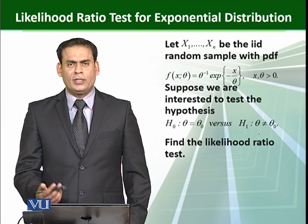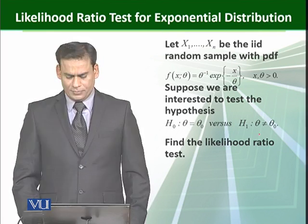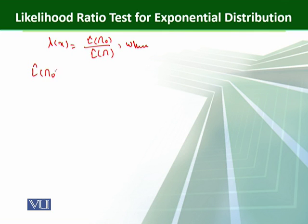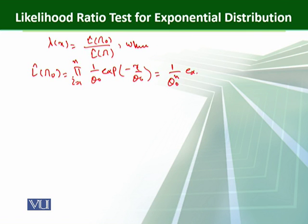Find the likelihood ratio test for this type of distribution. The likelihood ratio test lambda(x) is the ratio of the maximization based on the null hypothesis and the maximization based on the full parameter space. Where L-hat(theta naught) is equal to the product for i from 1 to n of (1/theta naught) * exp(-x/theta naught), which can be written as (1/theta naught)^n * exp(-sum(x)/theta naught).